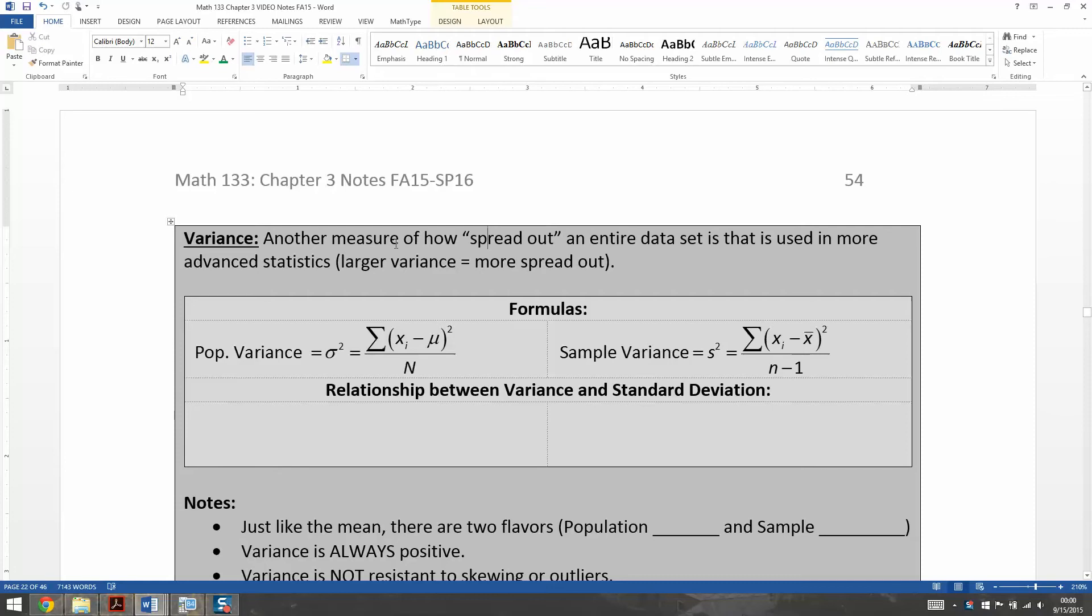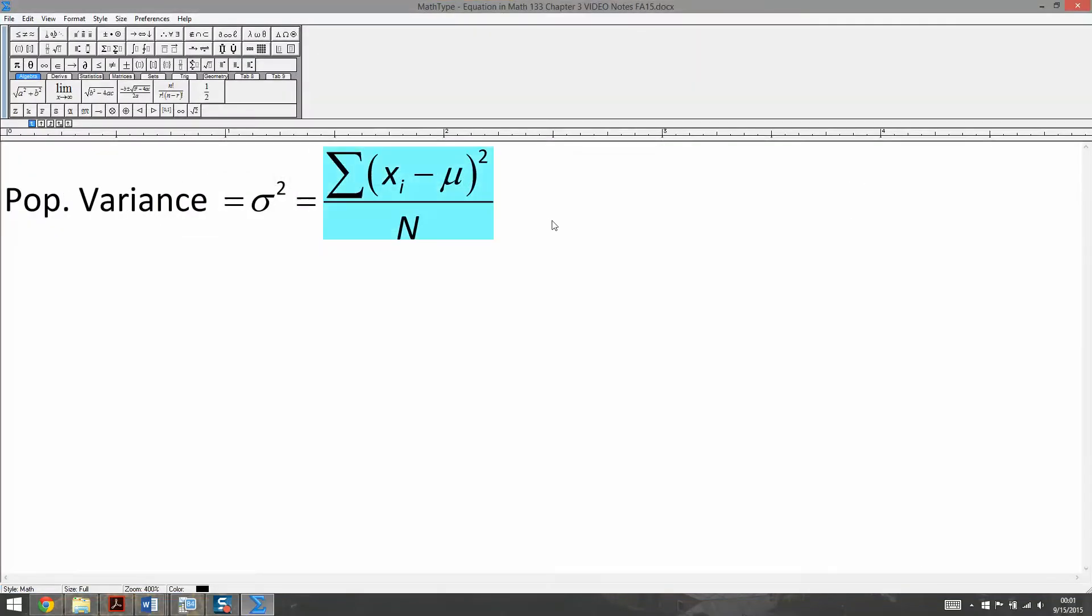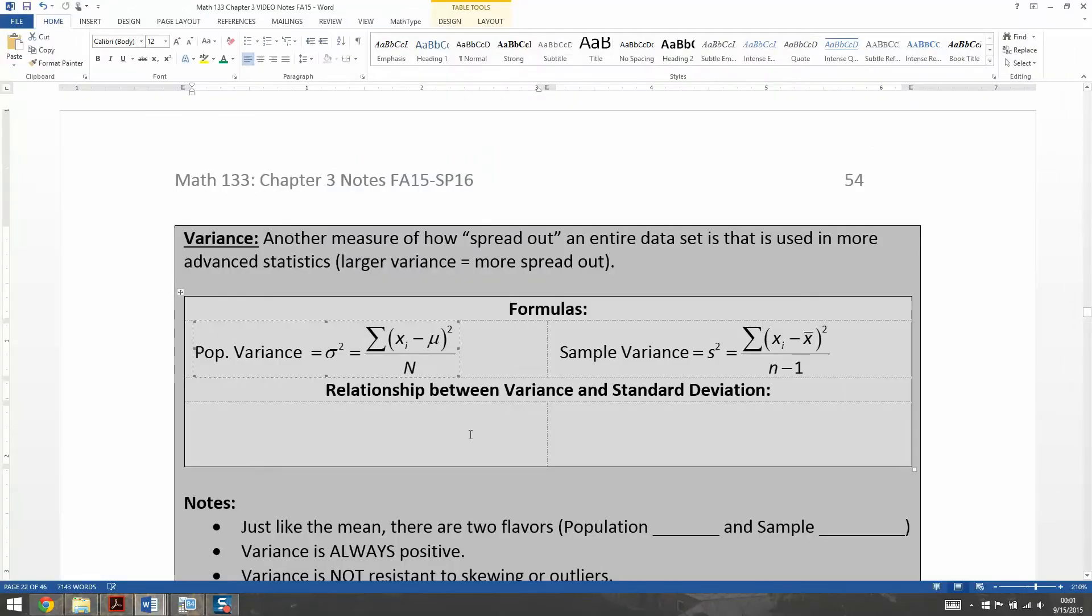Now variance is another measure of how spread out an entire data set is. So the larger your variance is, the more spread out your data is. Simple as that, just like standard deviation. And when you look at the formula for the population variance, you can see it's exactly the same as that of standard deviation, except it doesn't have that huge square root in it, which is a good thing, because we don't want the big square root. It actually makes things more difficult later on with later material.